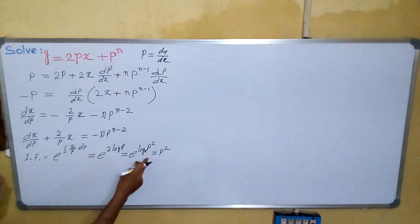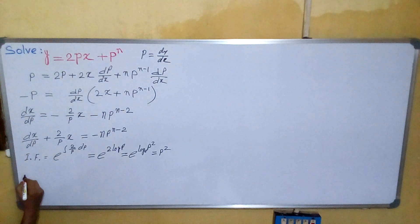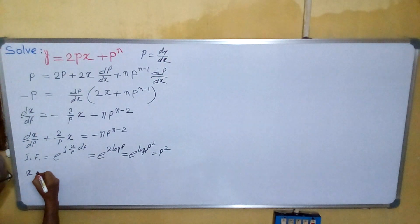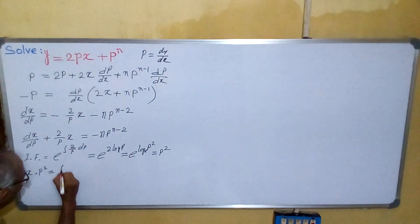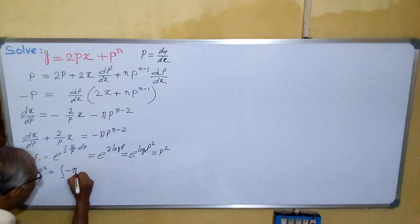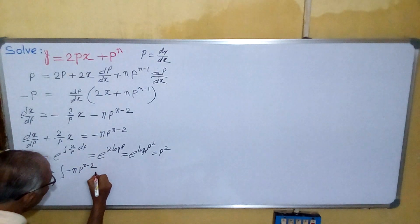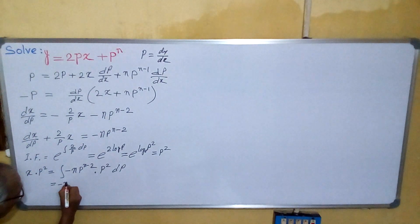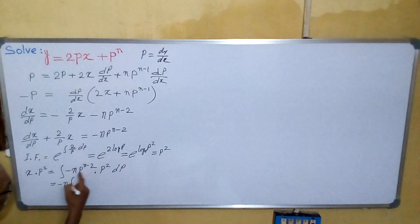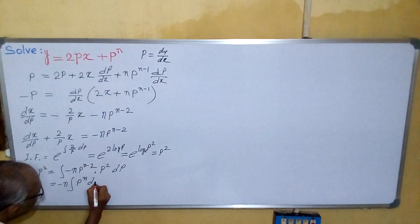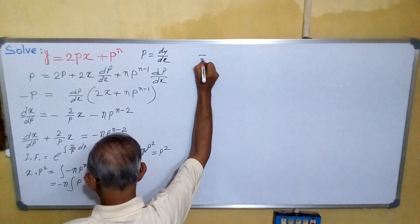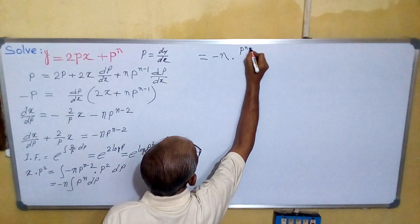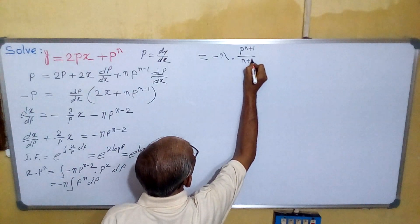So now, if we are finding the integration, the solution is x times the integrating factor p squared equals the integral of minus n times p to the power n minus 2 times p squared dp. This equals the integral of minus n times p to the power n dp, which equals minus n times p to the power n plus 1 divided by n plus 1, plus C.